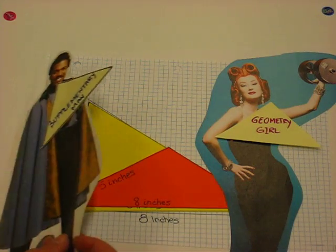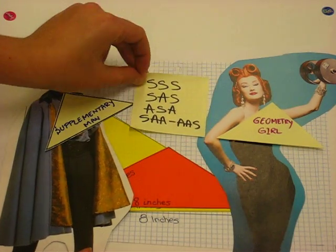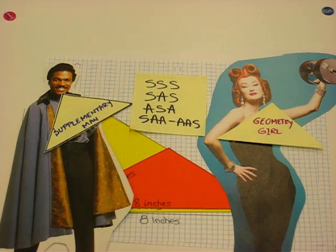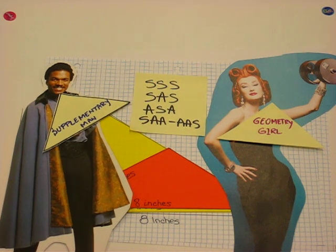I did learn my lesson. I know that SSS, SAS, ASA, and SAA are congruent shortcuts, but SSA isn't. You've learned well, Supplementary Man. Remember what you have learned and share with others the insight you have gained.